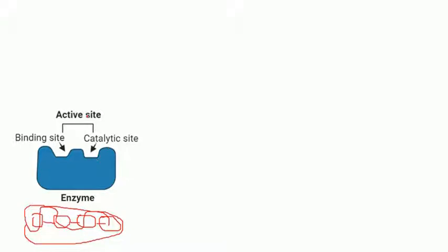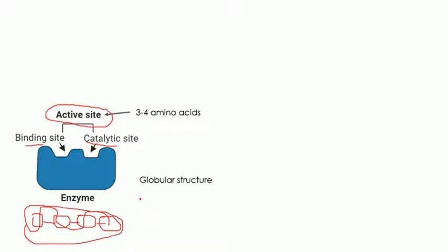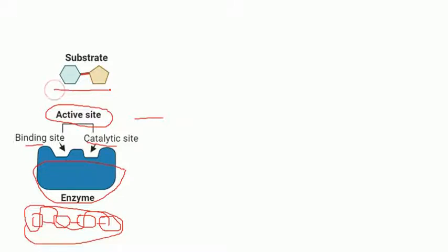The active site is made up of two parts: the binding side and the catalytic side. The binding side is responsible for the recognition and binding of a specific substrate, while the catalytic side is involved in the breakdown of that substrate. About three to four amino acids are associated with the synthesis of the active site, while the rest of the amino acids maintain the globular structure.